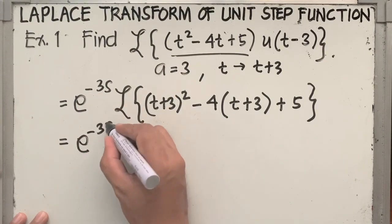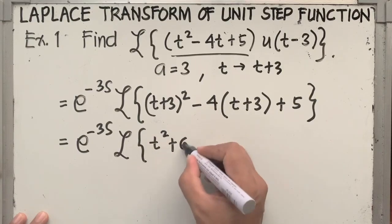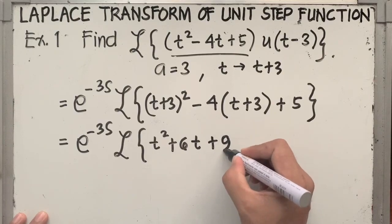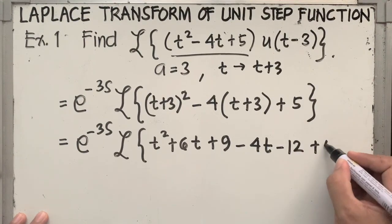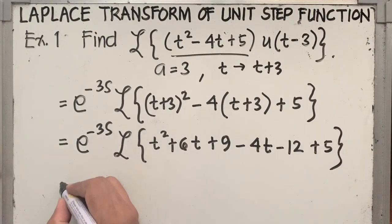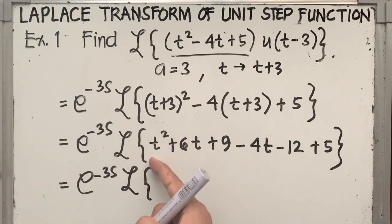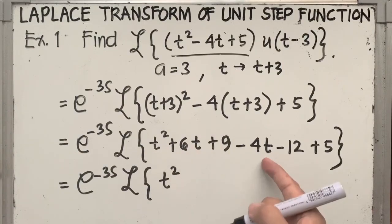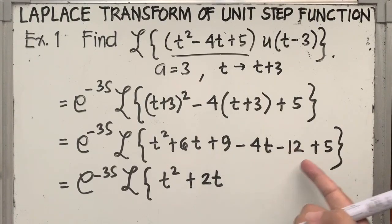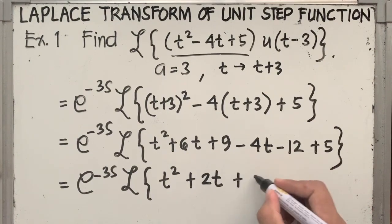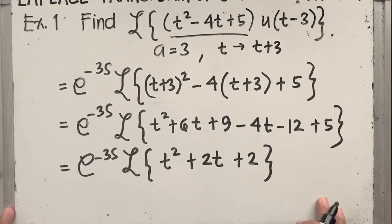Copy e raised to minus 3s. Before taking the Laplace, we expand first and combine like terms: t squared plus 6t plus 9 minus 4t minus 12 plus 5. Combining like terms: copy e raised to minus 3s times the Laplace of — t squared has no other like terms, 6t minus 4t equals positive 2t, and 9 minus 12 plus 5 equals positive 2. Now the next step is to find the Laplace transform of the functions inside the operator.